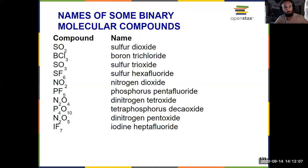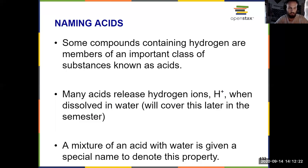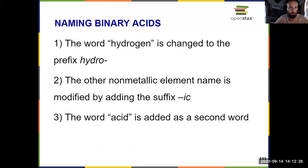Lastly, we need to know how to name acids. Some things that contain hydrogen have different behavior in aqueous solution — they're known as acids because they release hydrogen ions in the form of H+ when they're in an aqueous solution, a solution with water. So we give them a special name to denote that property.